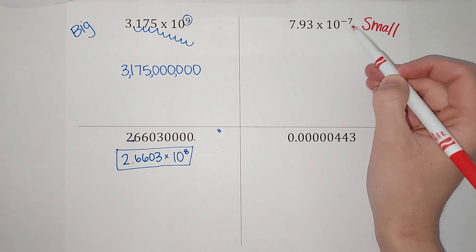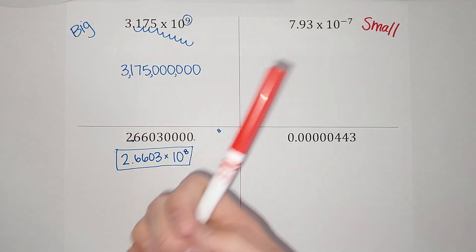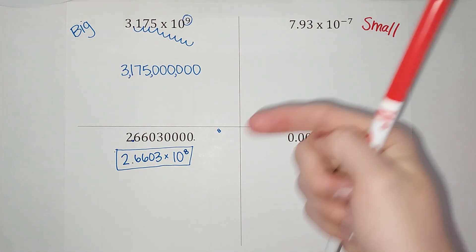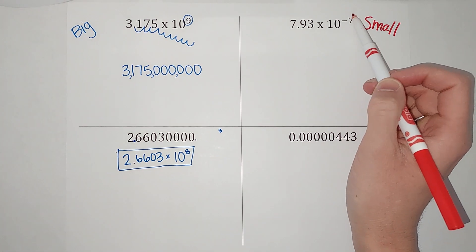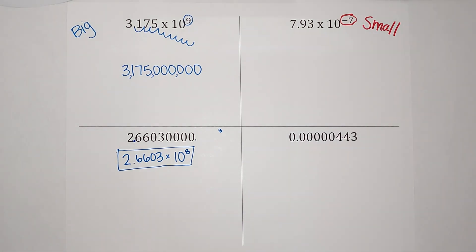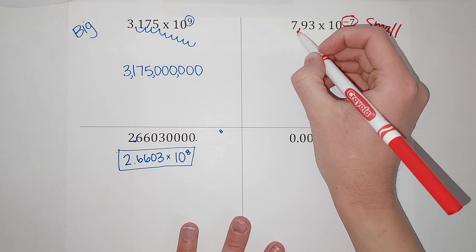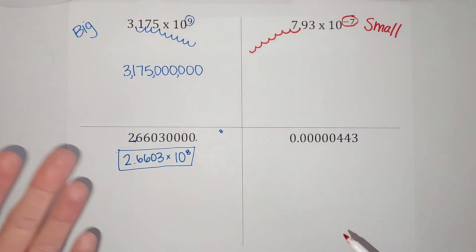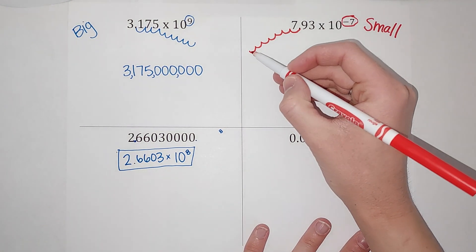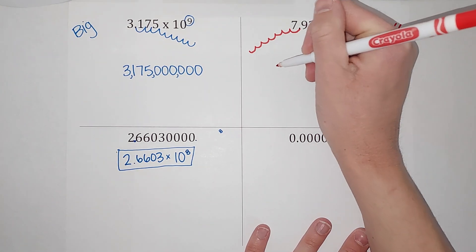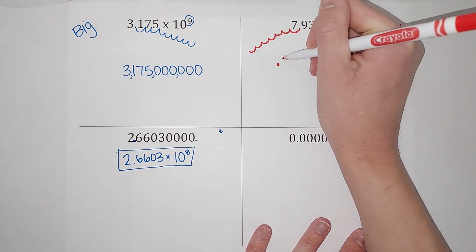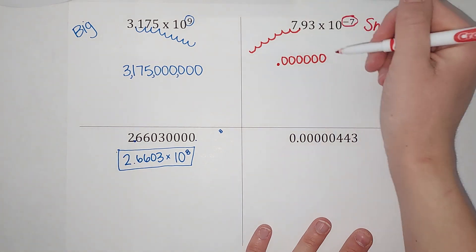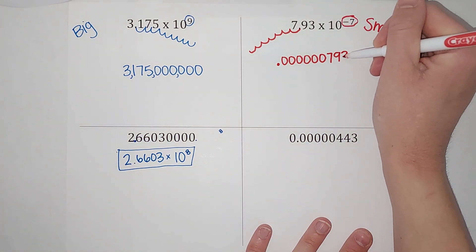Now let's look at when numbers are really small — that's when we use negative exponents. Here I've got negative seven. Since it's really small, instead of moving to the right like before, we're going to move to the left. Think about a number line: when you go negative, it's to the left. So with a negative seven exponent, I'm going to move to the left seven places: one, two, three, four, five, six, seven. I'll have six zeros and then my number — seven, nine, three.